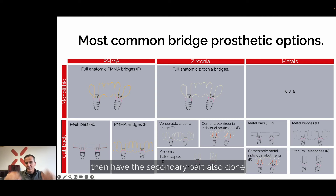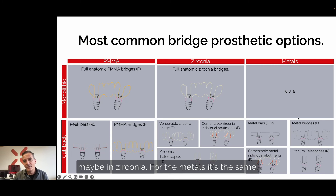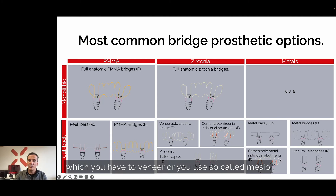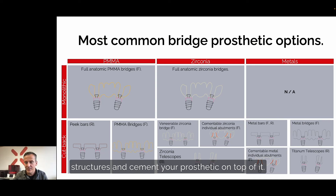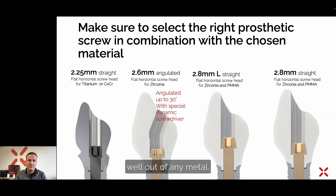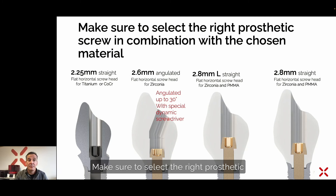You can do zirconia telescopes and have the secondary part also done in zirconia. For the metals it is the same — you can do a bar construction or a metal cutback technique which you have to veneer, or you use mesostructures and cement your prosthetic on top. Telescopic crowns can be done as well out of any metal.